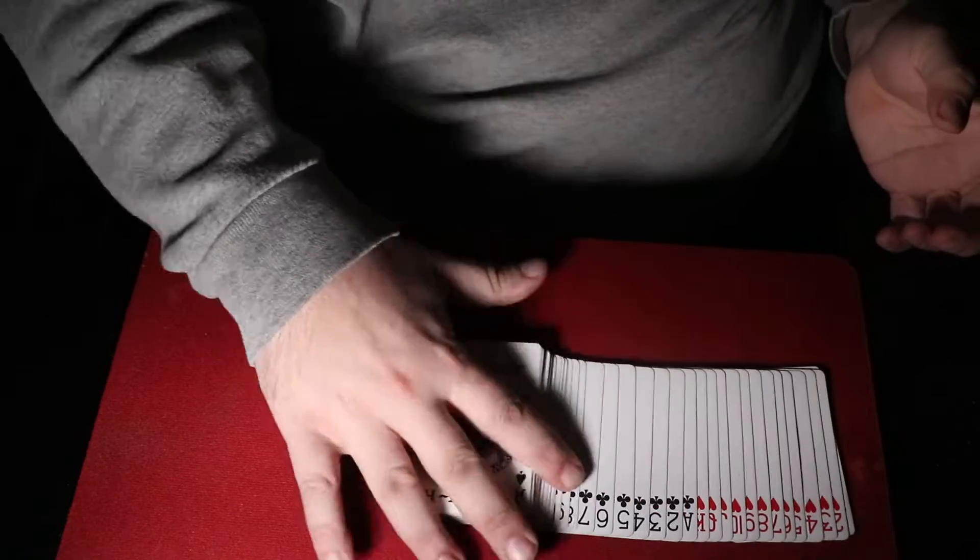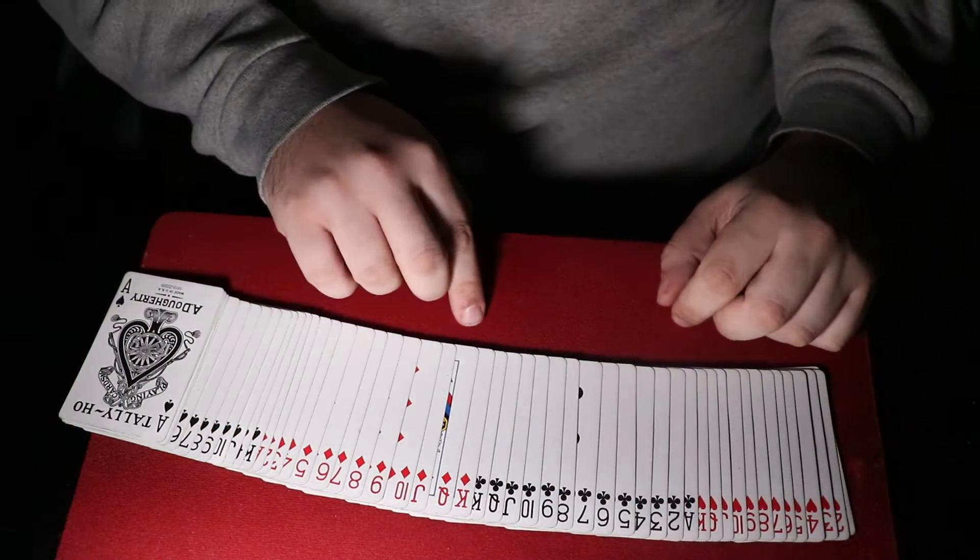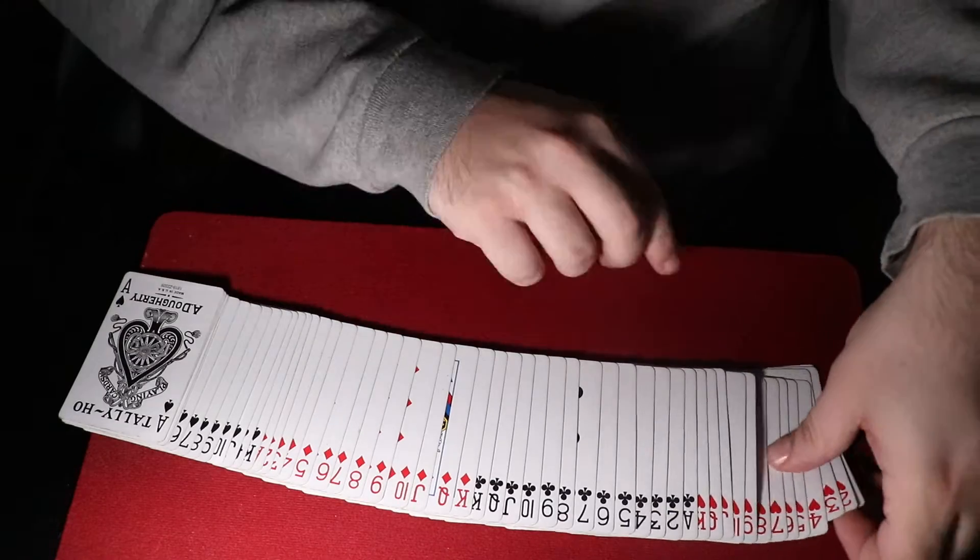Hello there guys, I have the deck in new deck order, running Ace to King of Spades, Ace to King of Diamonds, King to Ace of Clubs, and King to Ace of Hearts.